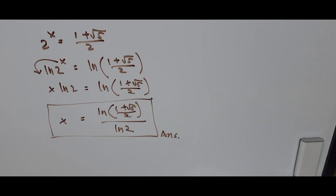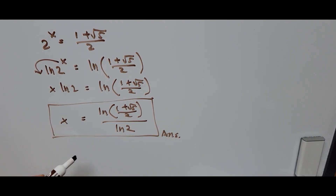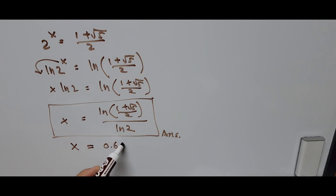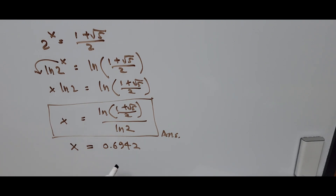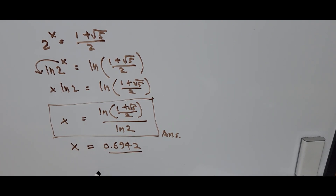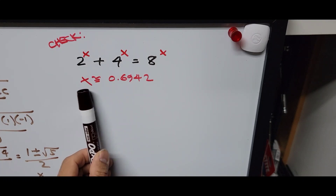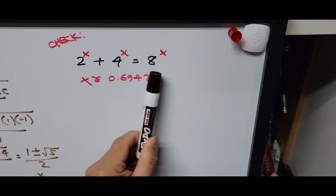For the sake of checking our answer, we get the numerical value of x so we can substitute it into the original equation and verify. The numerical value of x is approximately 0.6942, rounded to four decimal places — this is the approximate value.